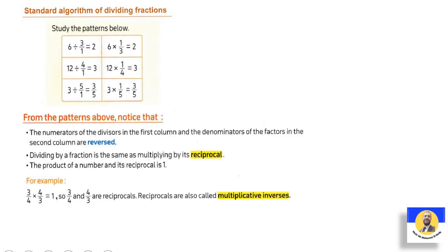Now let's talk about the standard algorithm for dividing fractions. For example, six divided by three equals two, so six times one-third also equals two. Similarly, twelve divided by four equals three, the same as twelve times one-quarter equals three. This works directly when the numerator is one. If the numerator is not one, we use a different approach.